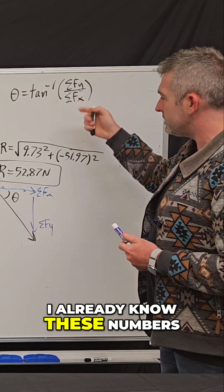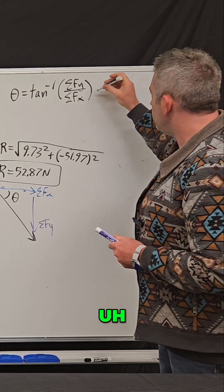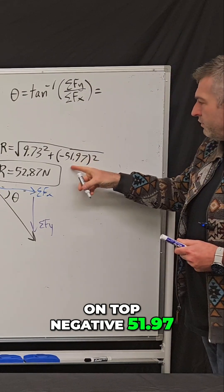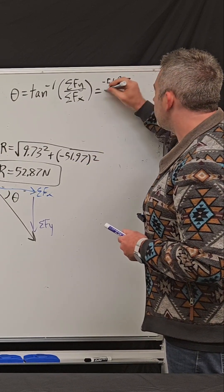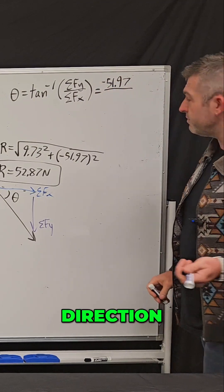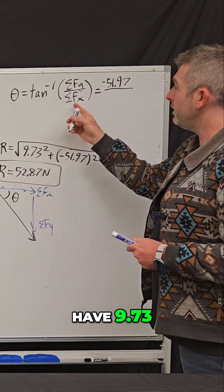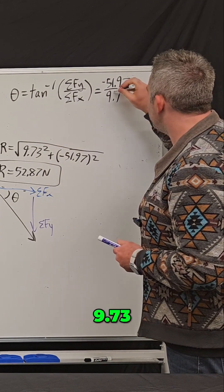And so again, I already know these numbers. We have on top negative 51.97, that's our sum of the forces in the y direction. And then we have 9.73 in the x direction.